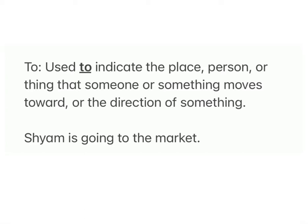A preposition can be used to indicate the place, person, or thing that someone or something moves toward, or the direction of something. For example: 'Shyam is going to the market.' Here 'to' is used to show direction. Jaise: Shyam market ki taraf ja raha hai — to yahan direction dikhane ke liye istemal hota hai.